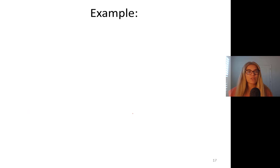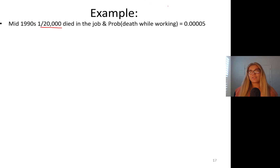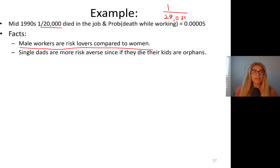Here's a real-world example. In the mid-1990s, 1 in 20,000 workers died on the job, so the probability of death while working is 0.00005 — calculated as 1 divided by 20,000. Some key facts: male workers are more risk-loving compared to women. Single dads are more risk averse since they are the only parent — if they die, their kids won't be cared for.